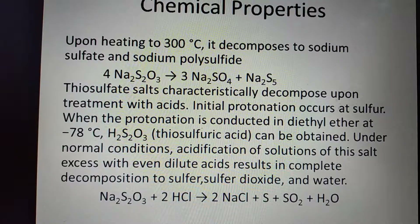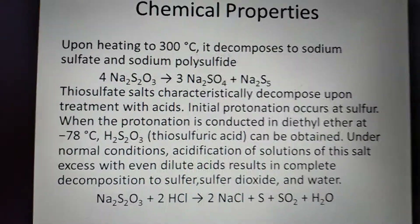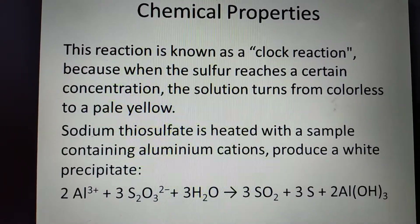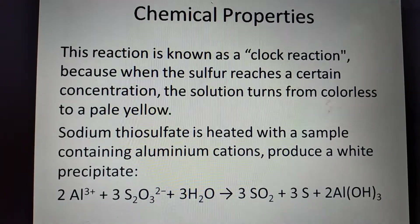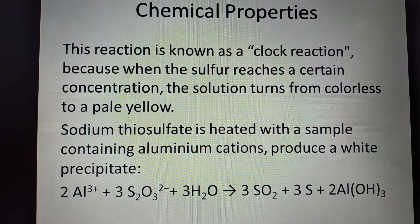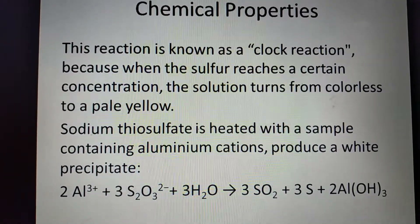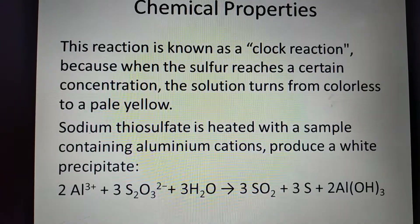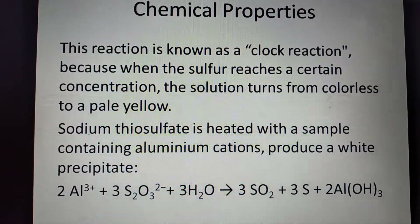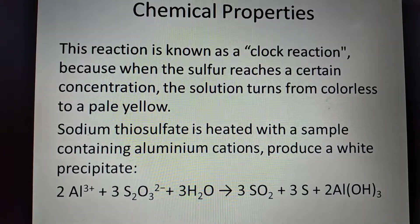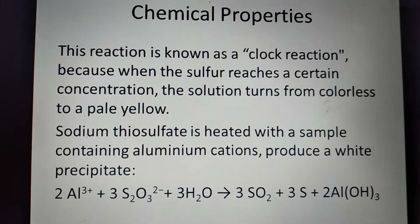The reaction is: Na₂S₂O₃ + HCl → NaCl + S + SO₂ + H₂O. This reaction is known as the clock reaction because when the sulfur reaches a certain concentration, the solution turns from colorless to pale yellow. Sodium thiosulfate heated with a sample containing aluminum cations produces a white precipitate: Al³⁺ + Na₂S₂O₃ + H₂O → SO₂ + S + Al(OH)₃.